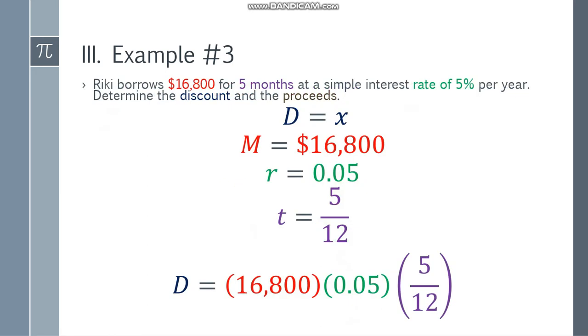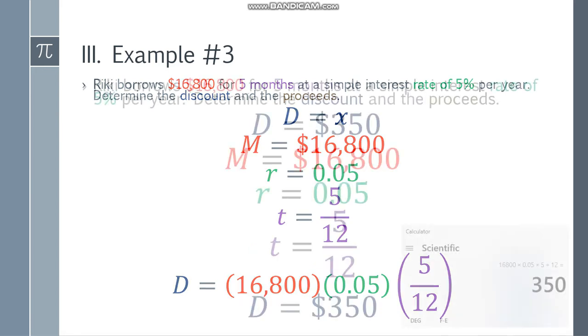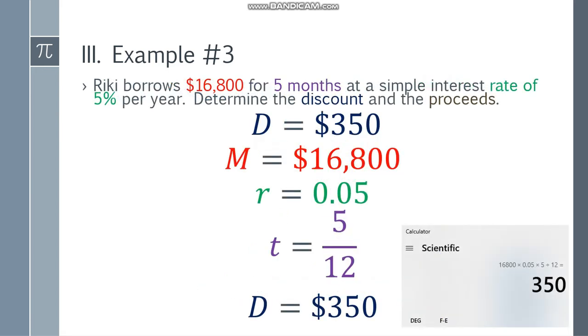Substitute into the formula D equals MRT: 16,800 multiply by 0.05 multiply by 5 over 12. The final answer will be $350.